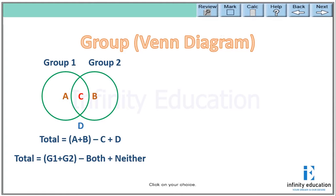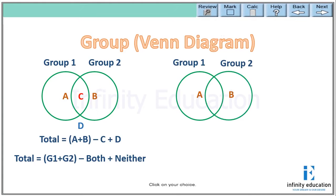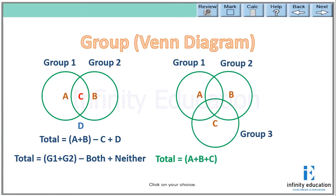Now what will happen if we have three groups? If there is group one with A number of people, group two with B number of people, and group three with C number of people — like the previous case — some people will belong from both of them. P number of people belong from both A and B, Q number of people belong from both A and C, and R number of people belong from both B and C. So they have been considered twice, and I have to subtract them once.